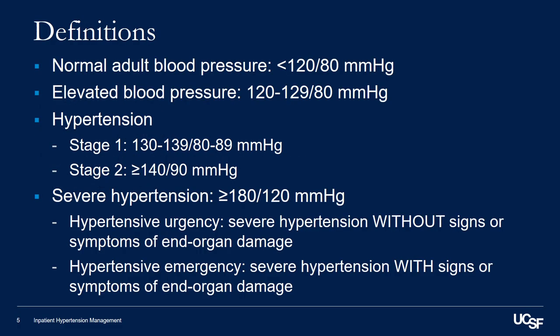First, a normal adult blood pressure is less than 120 over 80 millimeters of mercury. Hypertension is defined as greater than 130 over 80 millimeters of mercury, and severe hypertension is a systolic blood pressure greater than or equal to 180 millimeters of mercury, or a diastolic blood pressure greater than 120.